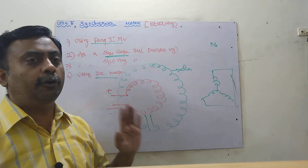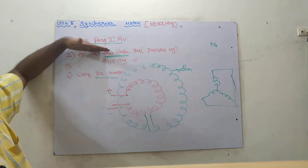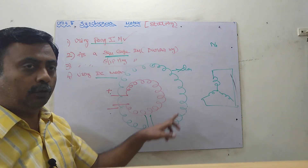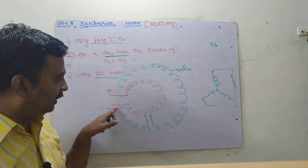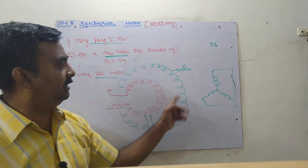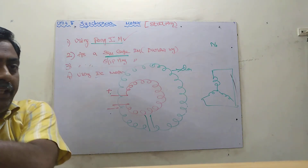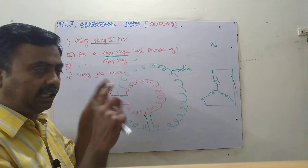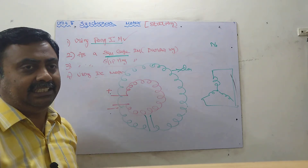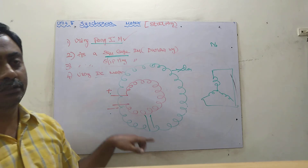To summarize: the synchronous motor's working principle is magnetic locking. It is not self-starting — it either runs at synchronous speed or not at all. The four starting methods are: pony motor, damper windings (squirrel cage principle), slip ring induction motor method, and DC motor. In the DC motor method, the motor remains attached and later acts as a DC generator supplying excitation to the field coils.